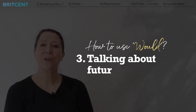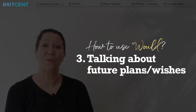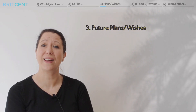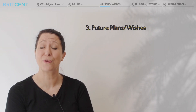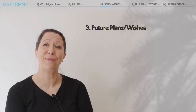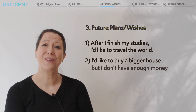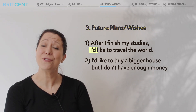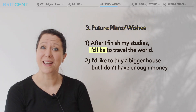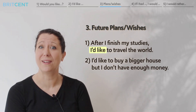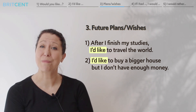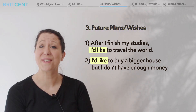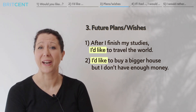When talking about future plans and wishes, we can also use 'I'd like', even if it's not possible for those things to happen. For example: After I finish my studies, I'd like to travel the world. I'd like to buy a bigger house but I don't have enough money.